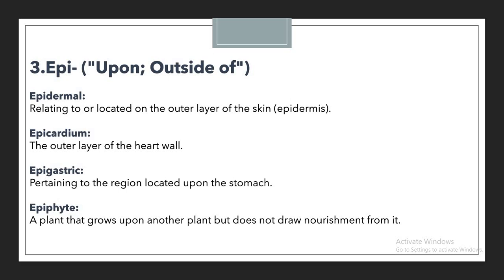The third example for EPI is epigastric. Epigastric means pertaining to the region located upon the stomach. Whenever we are describing a region that is located upon the stomach, we use the terminology epigastric, where EPI is used to showcase something as upon.